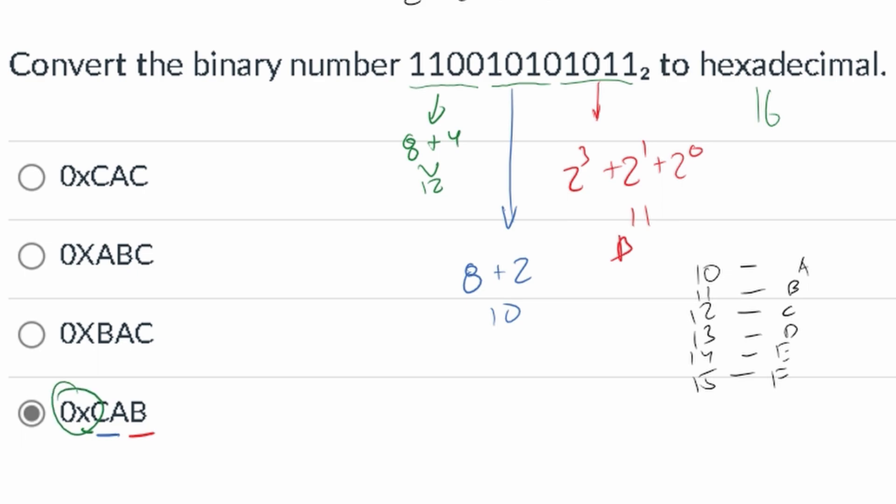We prefix this with a 0x, that means it's a hexadecimal. And that's how we get this as our answer.